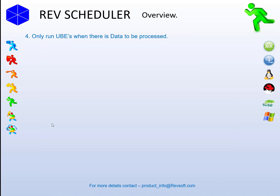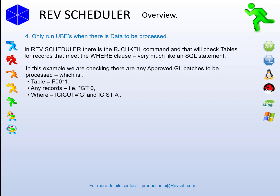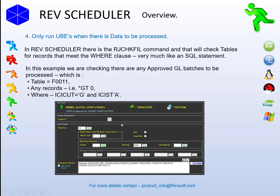Rolling on to task 4: this is to only submit UBEs when there's data to be processed. We've seen sites that just run UBEs and a lot of the time they were unnecessary as there was no data to be processed. In RevScheduler we have the RJCheckFill command, which will check any tables for the number of records where it meets the WHERE clause — very much like entering an SQL statement interactively and using the count value. In this example we're checking to see if there are any approved GL batches to be processed: check fill of table F0011, greater than zero records, GL batch, approved, waiting to be processed. This is what it looks like in the ERP One Cloud AWS instance — the actual command used on that server to run this task.